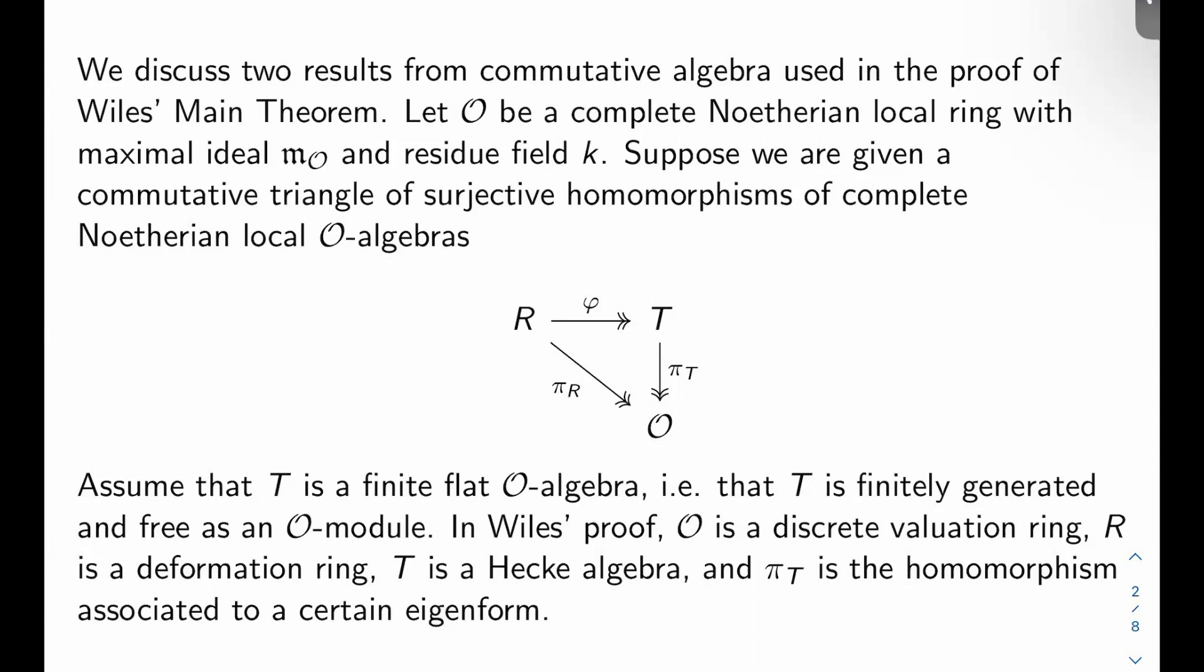R is a deformation ring whose constructions we just finished, and T is some kind of Hecke algebra here. And then π_T here is going to be the homomorphism out of that Hecke algebra associated to some eigenform. So we know that normalized Hecke eigenforms, which are newforms, correspond bijectively to maps out of certain Hecke algebras to the ring of coefficients of the newforms under consideration. So that's the setup here.